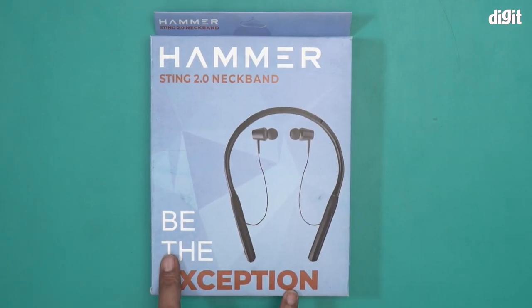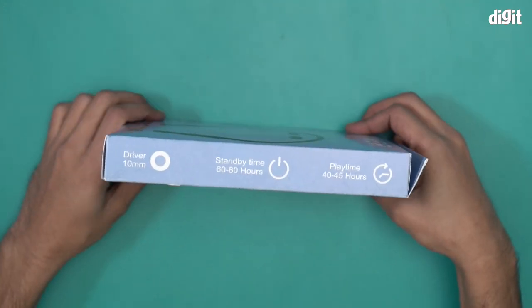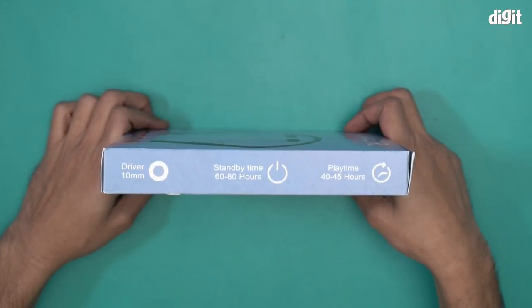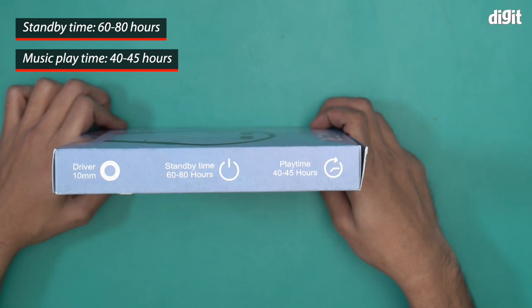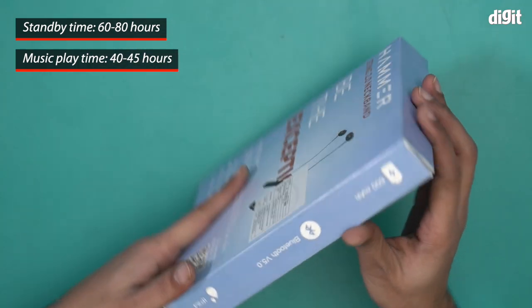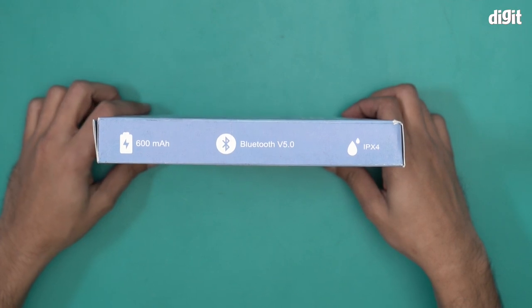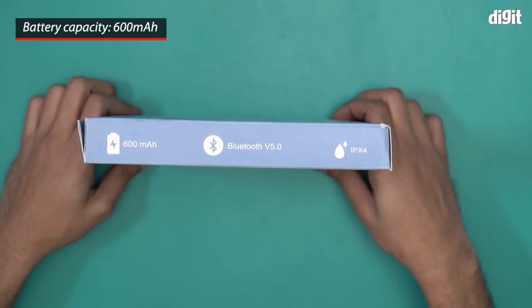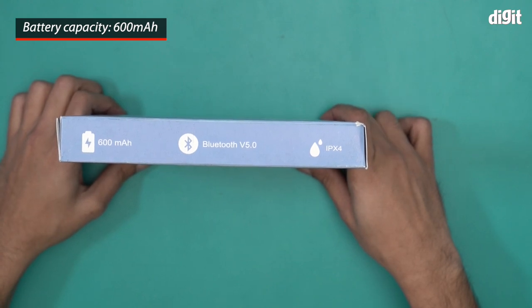The box has 'Be the Exception' written right over it. We have some information over here. This particular neckband comes with a 10mm audio driver, has a standby time of 60 to 80 hours and playtime of 40 to 45 hours. On this side it says it comes with a 600mAh battery, supports Bluetooth 5.0, and also comes with IPX4 sweat and water resistance.